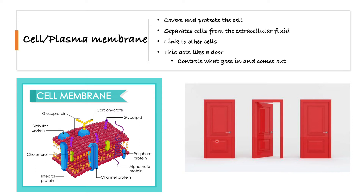Regulation is key — you don't want too much sodium inside the cell, and you don't want too much glucose to leave the cell. You want to regulate it. So when we zoom in, this is what the plasma membrane looks like. You see almost two layers — we call this the lipid bilayer.